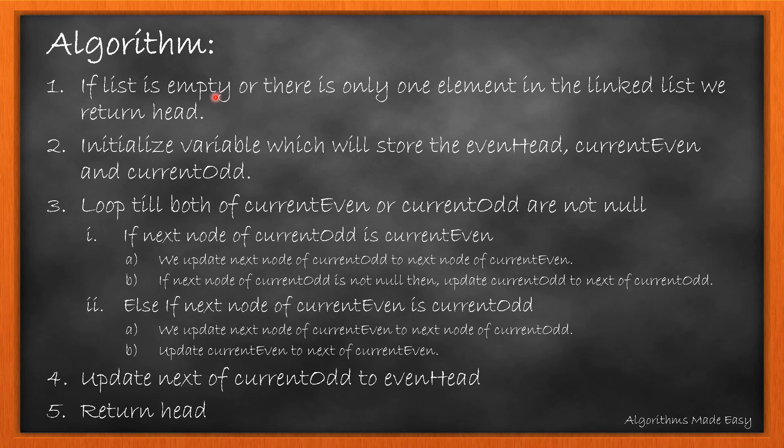Think of this solution in a way where we need to unweave a linked list. The algorithm works in that way only. Firstly, we will check if the list is empty or has only one node. In that case, we simply return the head. Now we initialize variables evenHead, currentEven, and currentOdd. They will store references.